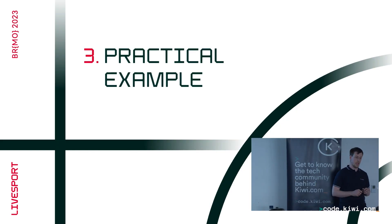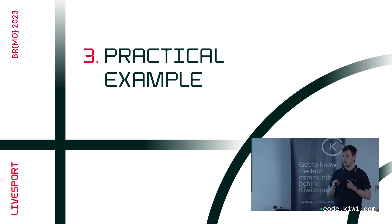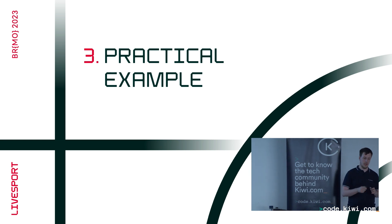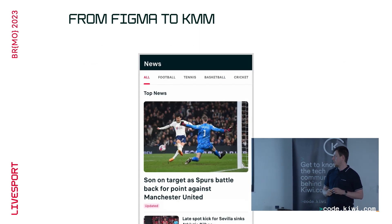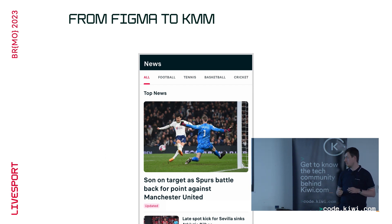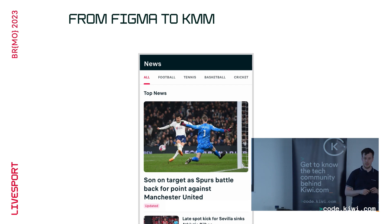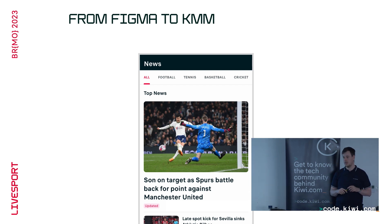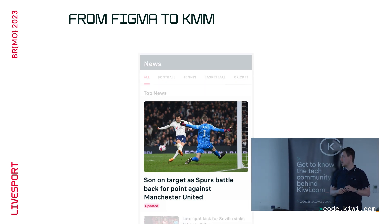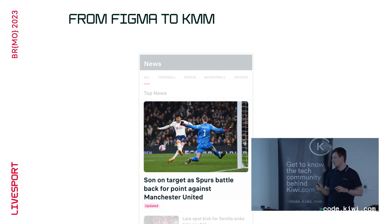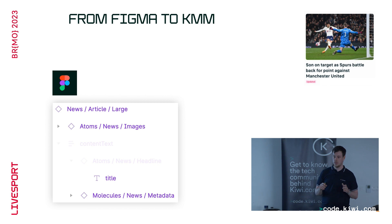Now for practical examples. We know the architecture and what happens inside KMM. For these examples I've chosen the News feature I mentioned at the beginning — here we have a main page with a list of articles and a slider on top where you can pick different topic pages.